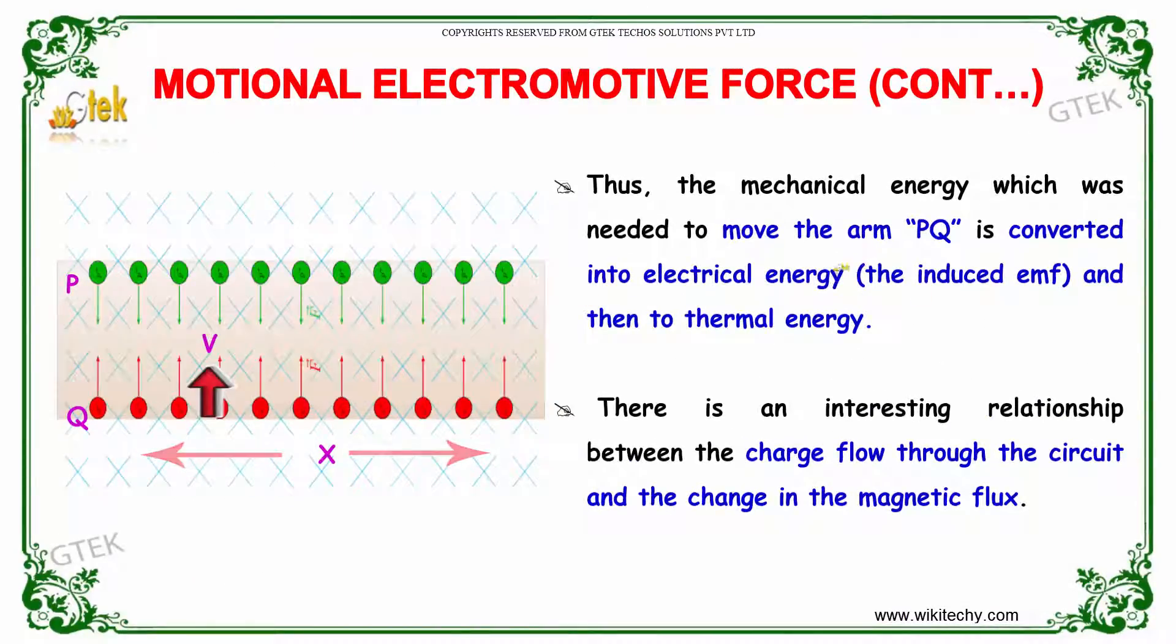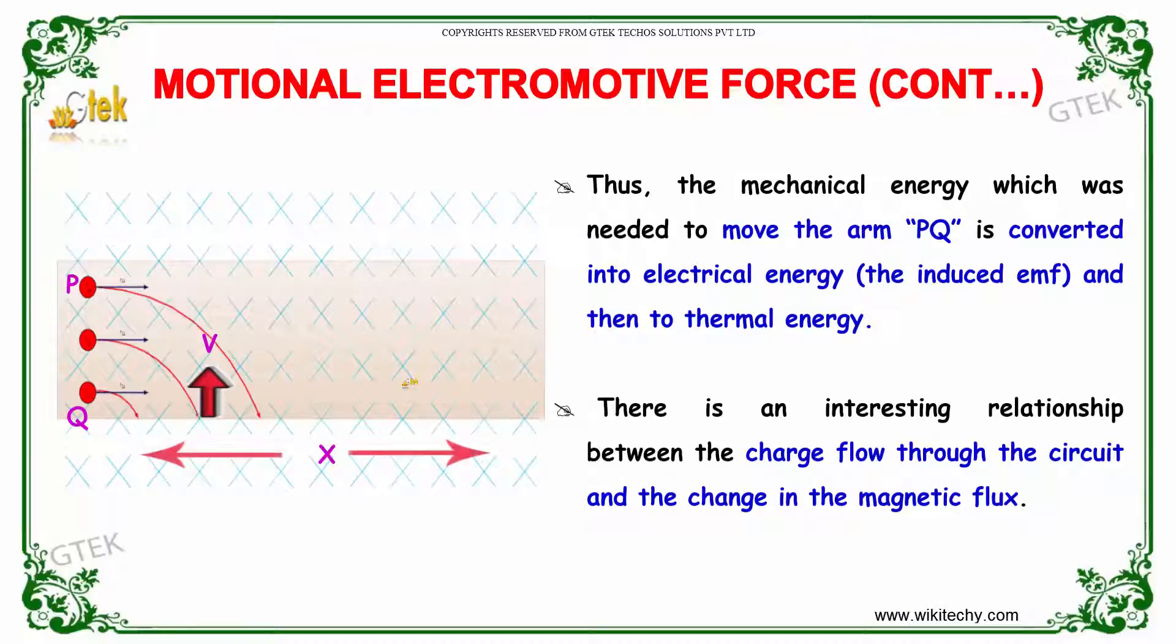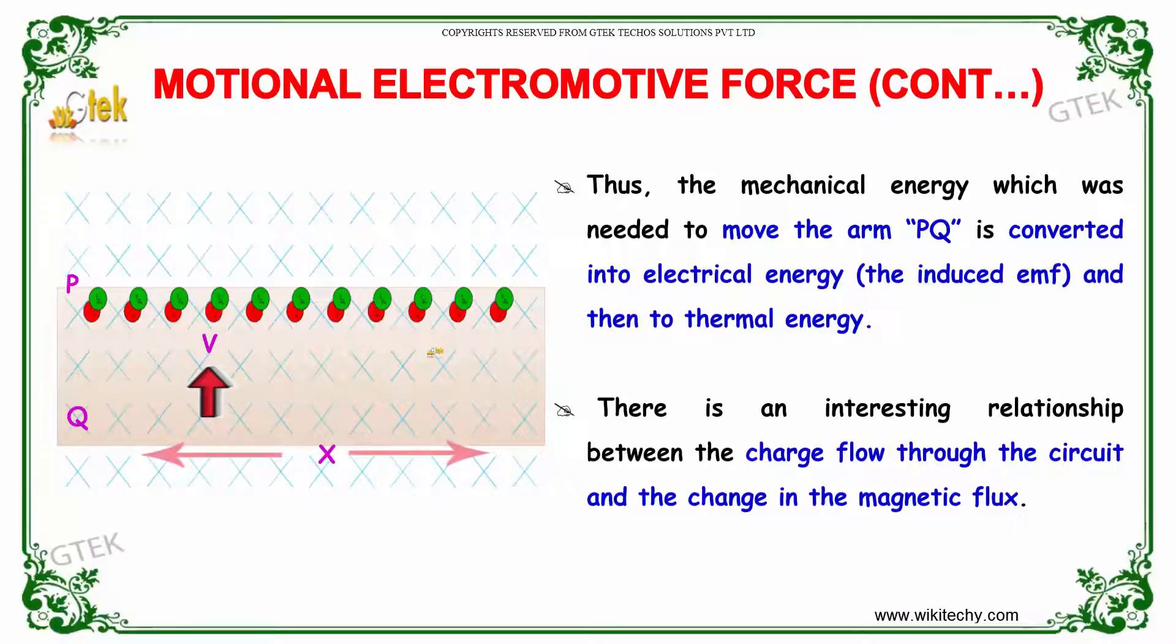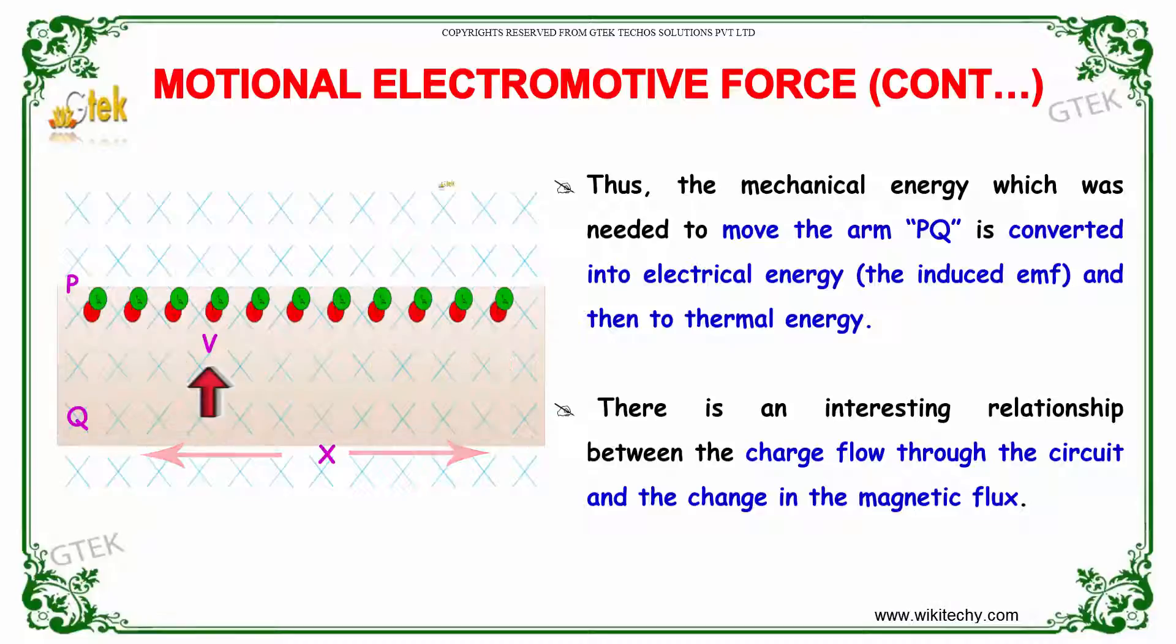Thus, the mechanical energy which was needed to move the arm PQ is converted into electrical energy and then to thermal energy. There is an interesting relationship between the charge flow through the circuit and the change in the magnetic flux.